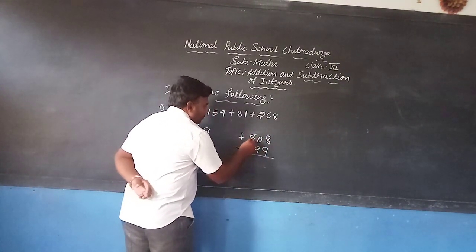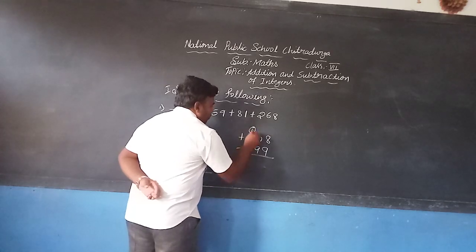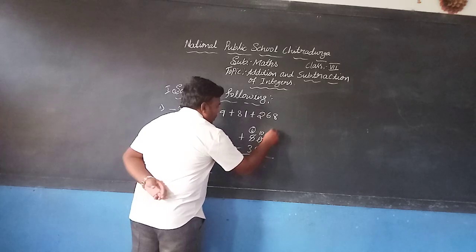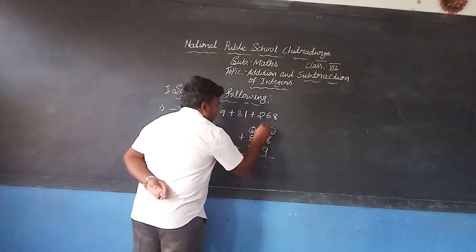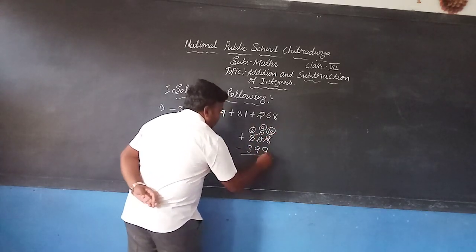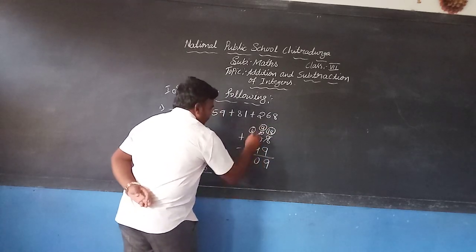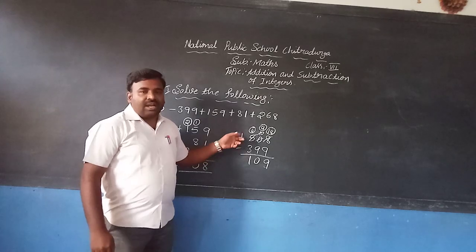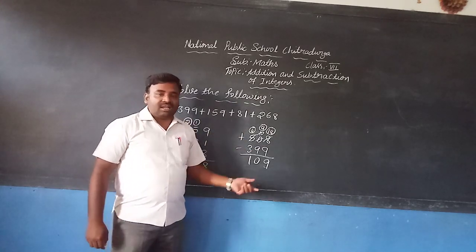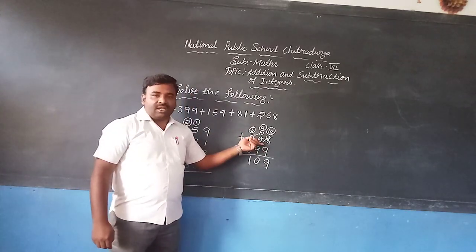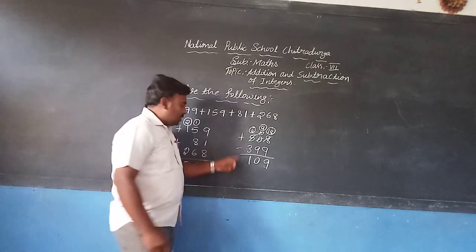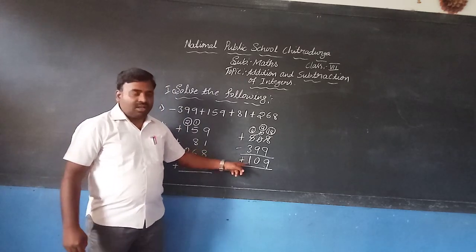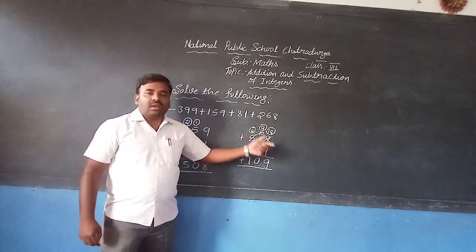The next place is 0, so borrow from 5. Now 5 becomes 4 and 0 becomes 10. After taking the borrow, 8 becomes 18 and 10 becomes 9. 18 minus 9 is 9. 9 minus 9 is 0. 4 minus 3 is 1. After finding the difference, attach the sign of the greater number. Here 508 is the greater number and it has the plus sign, so attach plus. The final answer is plus 109.